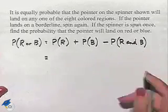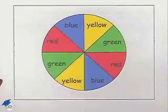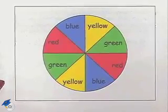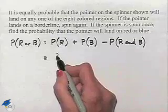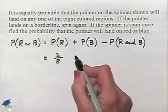Well, let's look back at the spinner. We have eight different regions and notice that two of those regions are going to be red. So we're going to have two out of eight choices, or that would be our probability for landing on red.